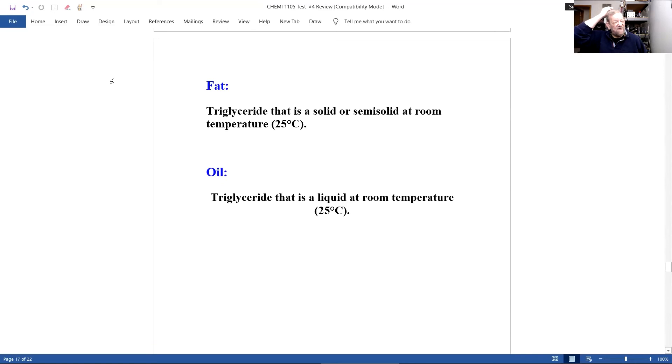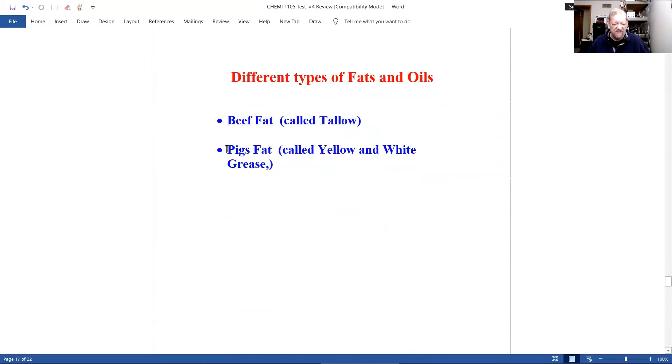Now, you should know a fat is a triglyceride that's a solid or semi-solid at room temperature. And oil is a triglyceride that's a liquid at room temperature. And you should know beef fat is tallow. Pig's fat can be called white, yellow, or white grease. You should know this.